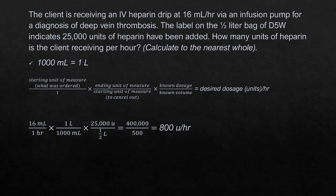This is how we set up this problem in dimensional analysis. The first step is the starting unit of measure, or what was ordered — in this case, 16 milliliters an hour. We convert with liters and milliliters, putting milliliters diagonal from each other so they can cross out. Now we're left with liters per hour, but we want to get to units per hour. The next part is the known dosage and known volume: 25,000 units of heparin in a half liter bag of D5W. Liters are diagonal from each other so we can cross those units out, and now we're left with units per hour.